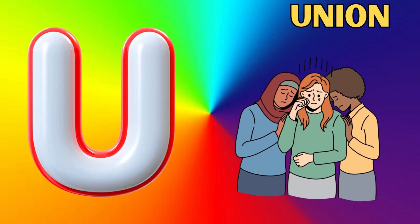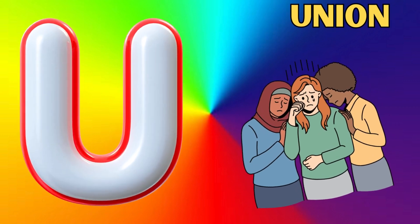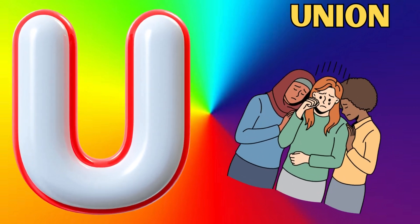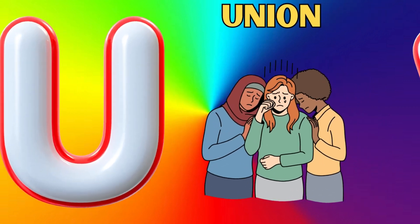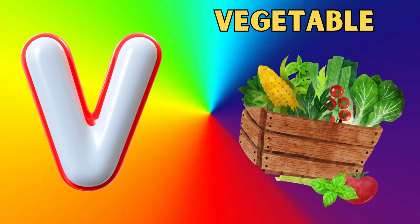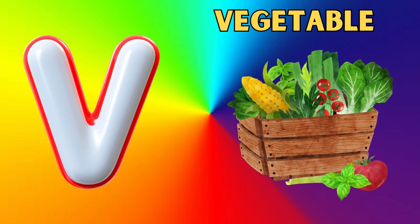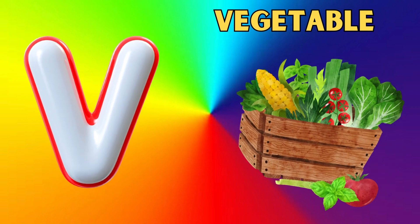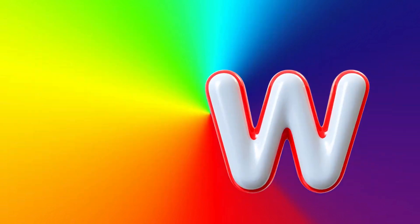U is for union, union. V is for vegetable, vegetable.